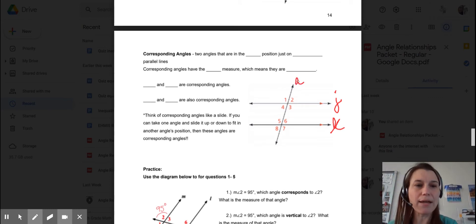And when we do that, it creates these eight angles: 1, 2, 3, 4, 5, 6, 7, 8.